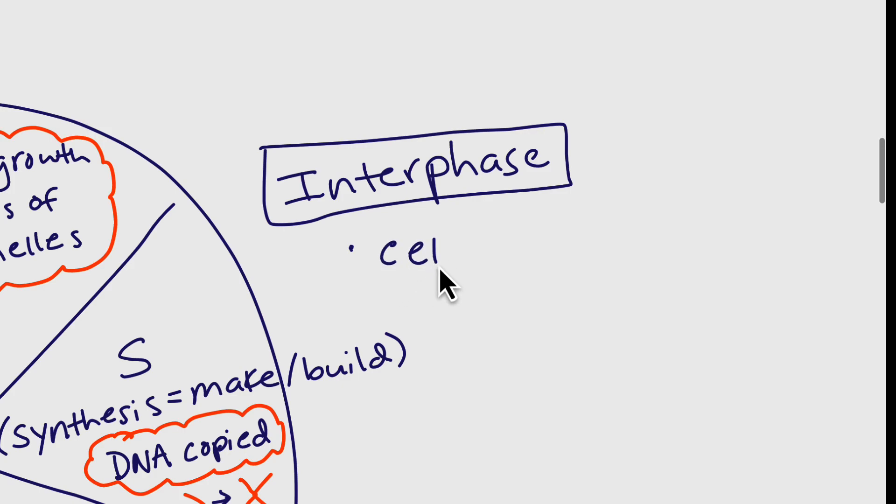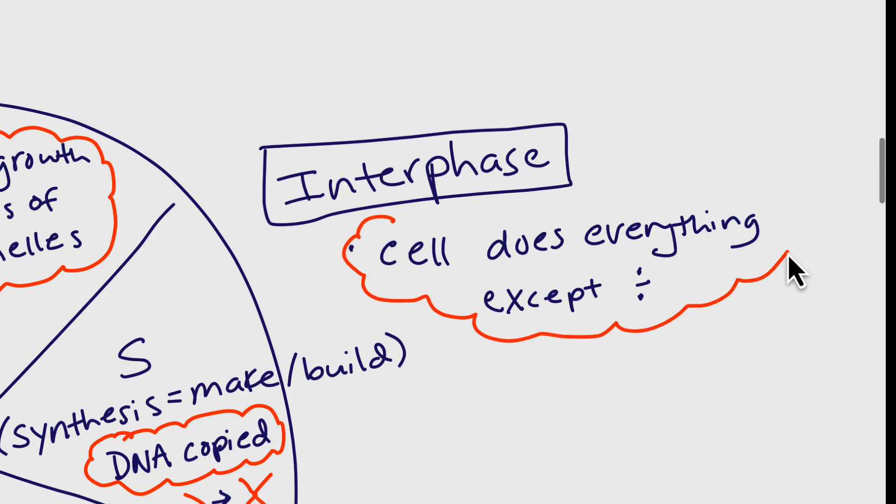So we can think of the cell does everything except dividing in interphase. And that's the G1, S, G2, and then what I'm going to draw in a moment, G0.